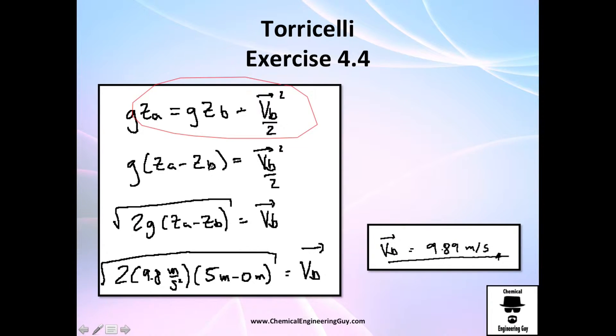And once again, solve for the question you were asked, which is velocity, what's the velocity? And remember, I always try to use five minus zero, even though I know it's five, but it makes a little bit more sense in mathematics. You have your two variables, right here, gravity 9.8, and you've got your velocity, which is 9.89 meters per second, which is a lot.